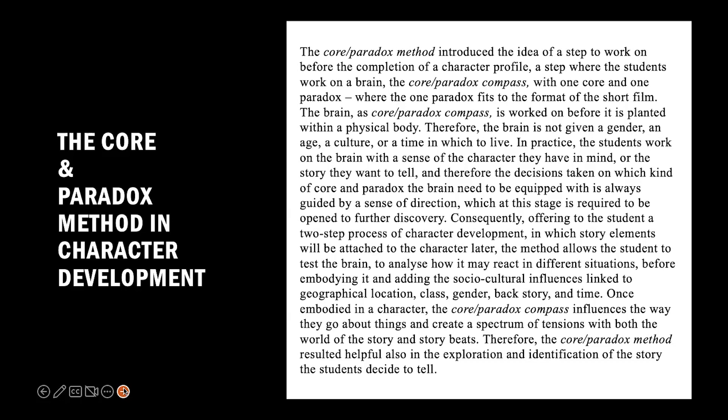In practice, the students work on the brain with a sense of the character they have in mind, or the story they want to tell, and therefore the decision taken on which kind of Core and Paradox the brain needs to be equipped with is always guided by a sense of direction, which at this stage is required to be open to further discovery. This offers students a two-step process of character development in which story elements — geographical location, class, gender, backstory, and time — are attached to the character later.